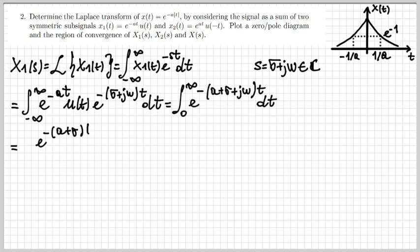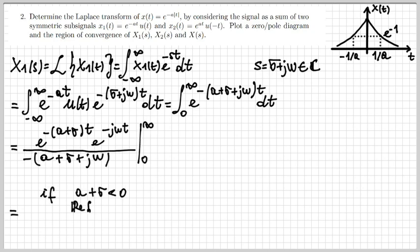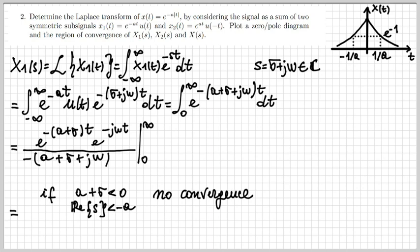Here is the integral of e to the minus at times u(t), and I calculate the integral. The expression is a fraction evaluated between zero and infinity. The key point is when does this converge. We substitute plus infinity and then zero in t. The convergence is determined by whether when we replace t with plus infinity this converges. If a plus sigma — which pre-multiplies t in the exponential — is negative, then there is no convergence, because I have a negative number times t and when t goes to plus infinity this diverges.